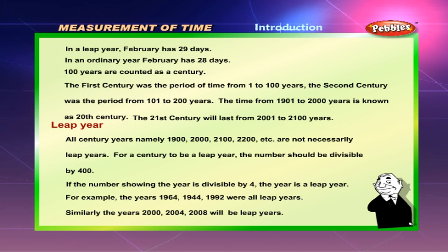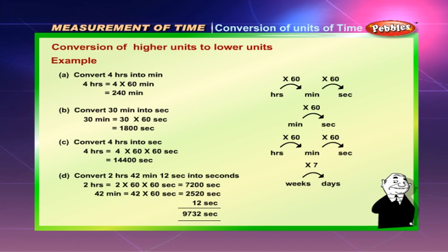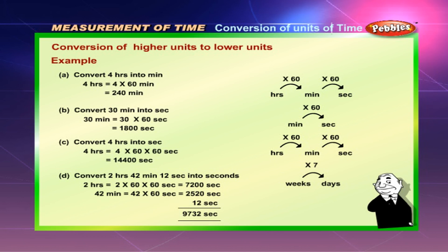Conversion of units of time — Conversion of higher units to lower units. Example: Convert 4 hours into minutes. 4 hours is equal to 4 into 60 minutes, which is equal to 240 minutes. Convert 30 minutes into seconds. 30 minutes is equal to 30 into 60 seconds, which is equal to 1800 seconds.